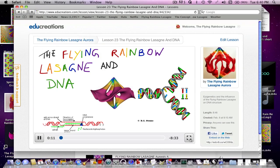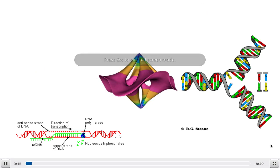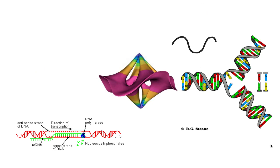Rainbow lasagna and DNA. DNA is usually depicted as this linear double helix, very similar to what we've got here in this illustration.